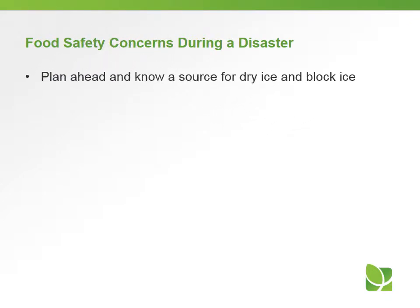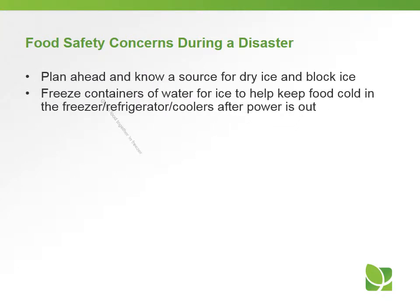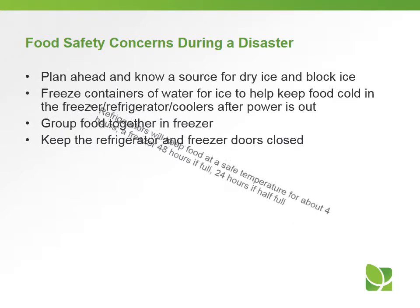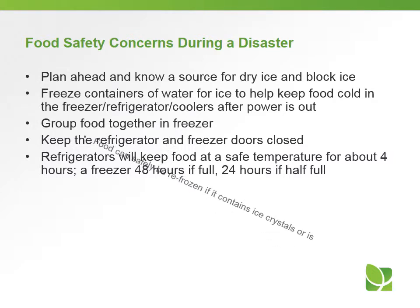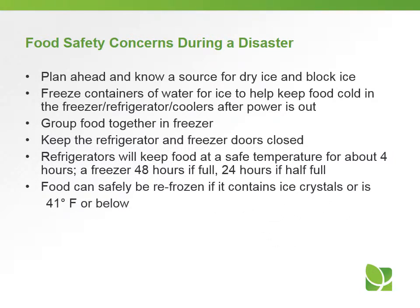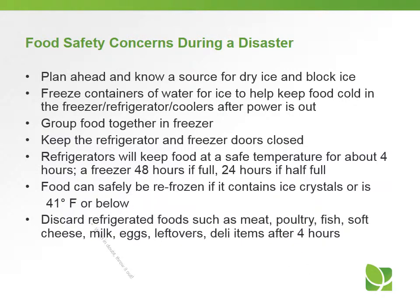Here are some food safety concerns during a disaster. Make sure you plan ahead and know a source for dry ice and block ice. Freeze containers of water to help keep food cold in the freezer, refrigerator, or coolers if the power goes out. Group food together in your freezer to keep it cold, and keep refrigerator and freezer doors closed — do not keep opening them, as you will lose precious cold air. Refrigerators will keep food at a safe temperature for about 4 hours, and a freezer for about 48 hours if full, or only about 24 hours if half full. Food can safely be refrozen if it contains ice crystals or is 41 degrees or below, but if it goes above 41 degrees, it is not safe and needs to be thrown out.